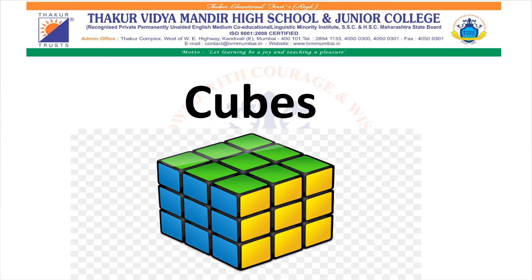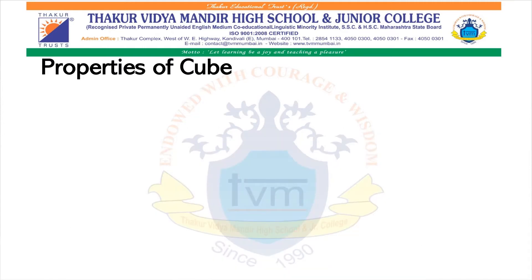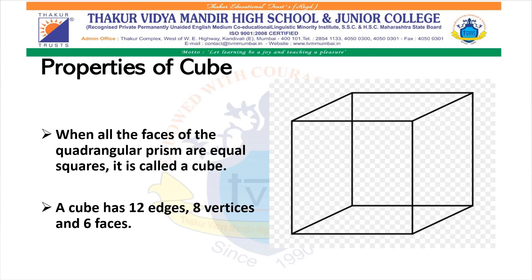Second, Cubes. Properties of Cube: When all the faces of the quadrangular prism are equal squares, then it is called a cube. A cube has 12 edges, 8 vertices and 6 faces.